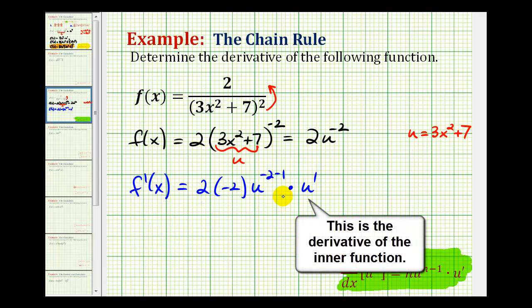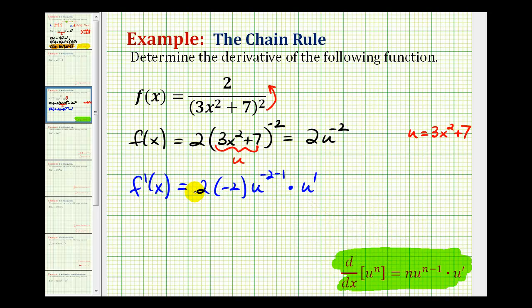So this would be the derivative of the given function, but now we need to rewrite this in terms of x rather than u. So we know u is equal to three x squared plus seven, but we also need u prime. So u prime would be six x.